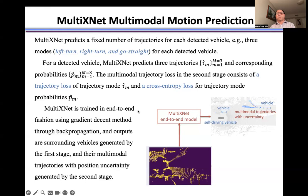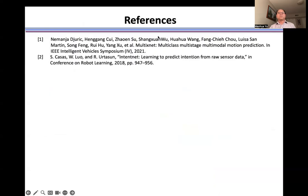MultiXNet is an end-to-end model because it maps the LiDAR sensor data directly to the multimodal trajectories with position uncertainty for each detected vehicle. For more details, please check this reference. Thank you.